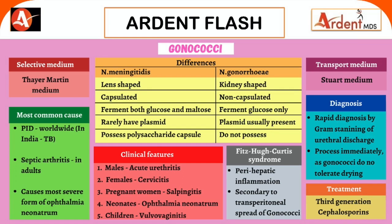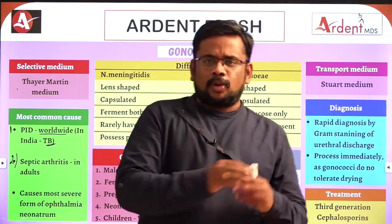Summary of clinical features: males — acute urethritis; females — cervicitis; pregnant women — salpingitis; neonates — ophthalmia neonatorum; children — vulvovaginitis. Fitz-Hugh-Curtis syndrome involves perihepatitis. Diagnosis is by gram staining of urethral discharge. Processing must be done immediately as gonococci are susceptible to drying. Treatment is third-generation cephalosporins.